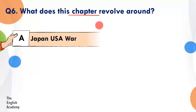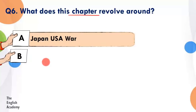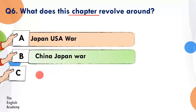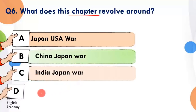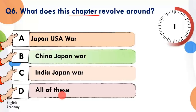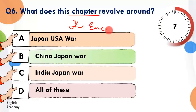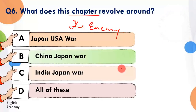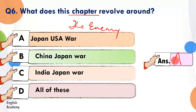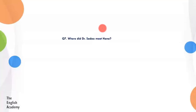Question 6: What does this chapter revolve around? Option A: Japan–USA war. Option B: China–Japan war. Option C: India–Japan war. Option D: all of these. The time starts now. The answer is Option A — Japan and USA war. Those events form the backdrop context of the story. Question number 7.